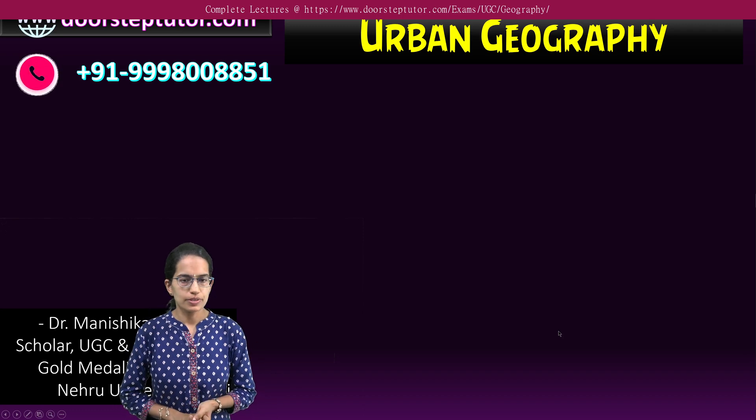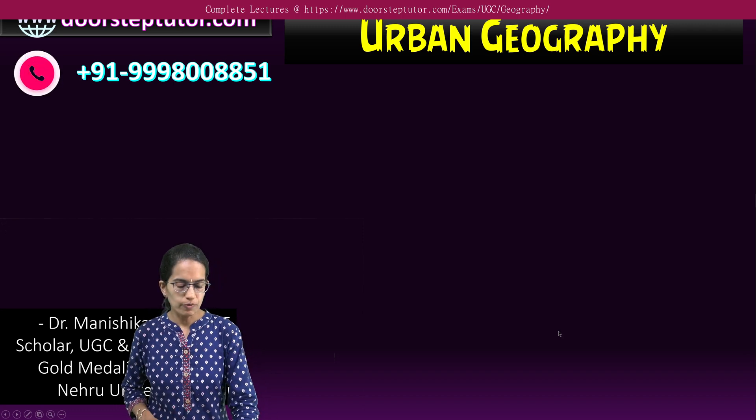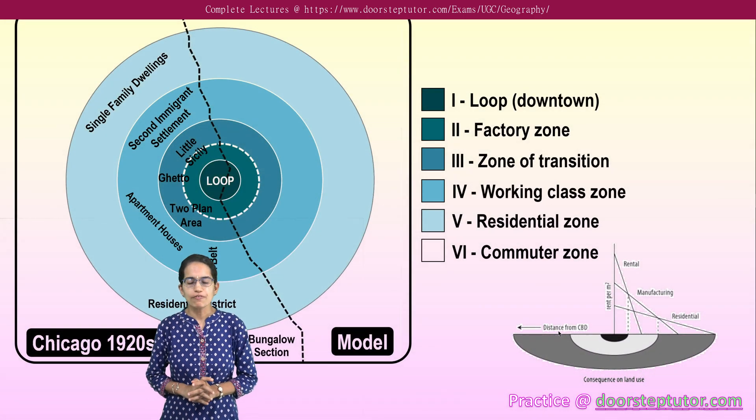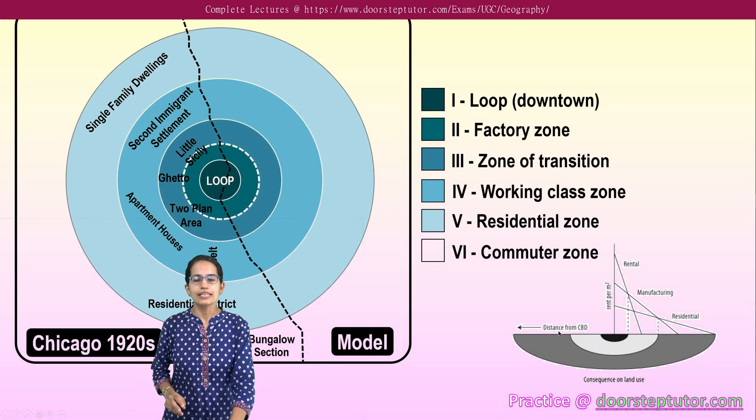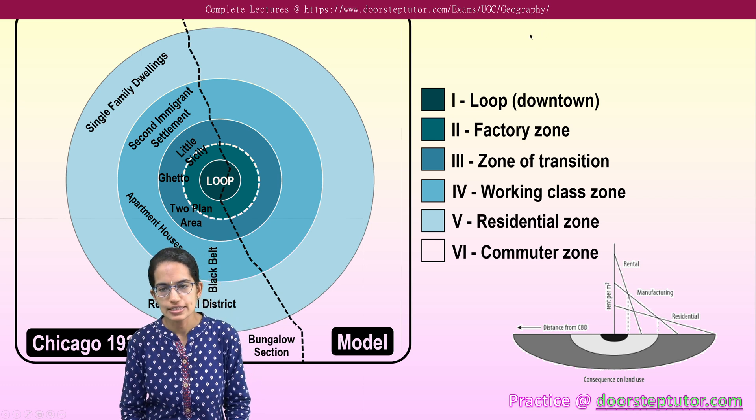Starting with the next section on urban geography, let's focus on some of the important models. The very first model that we would talk about is the model given by Burgess and this model is known as the concentric model.